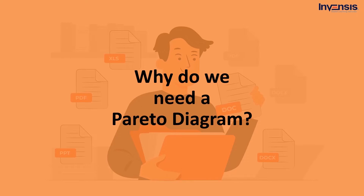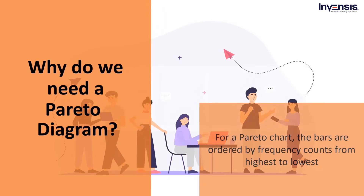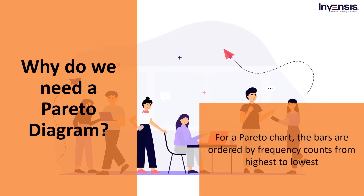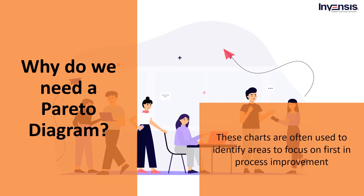We will begin this session by understanding a Pareto Chart and why we need it. A Pareto Chart is a unique type of bar chart. Frequency counts arrange the bars from highest to lowest. These charts are frequently used to determine which areas of process improvement to prioritize first. Quality tools have been the focus of our attention in recent months, covering root cause analysis, RCA, thought maps, and check sheets as highlights of the seven quality tools.